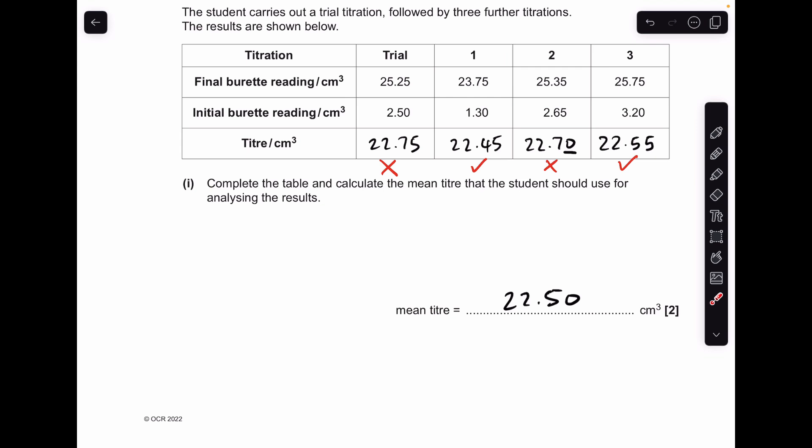Moving on to the mean titre that the student should use, you never include the trial and you only include concordant results. They are results that are within 0.1 of each other, and so therefore they are concordant: one and three. We're ignoring two. So the mean titre is 22.50.